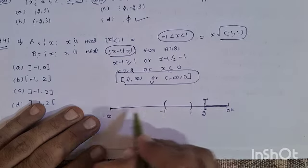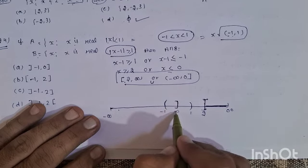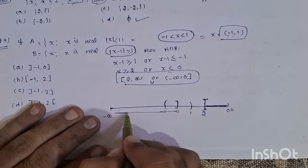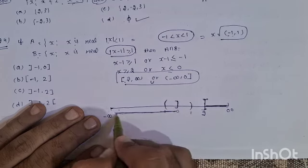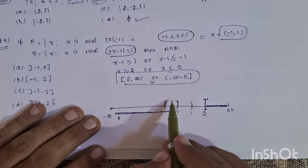1 is at minus infinity to 0. 0 is the closed interval. This is going down here.